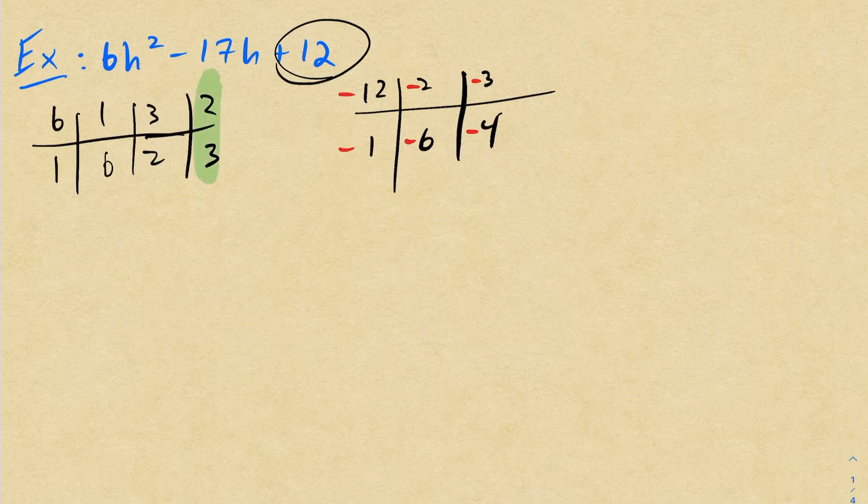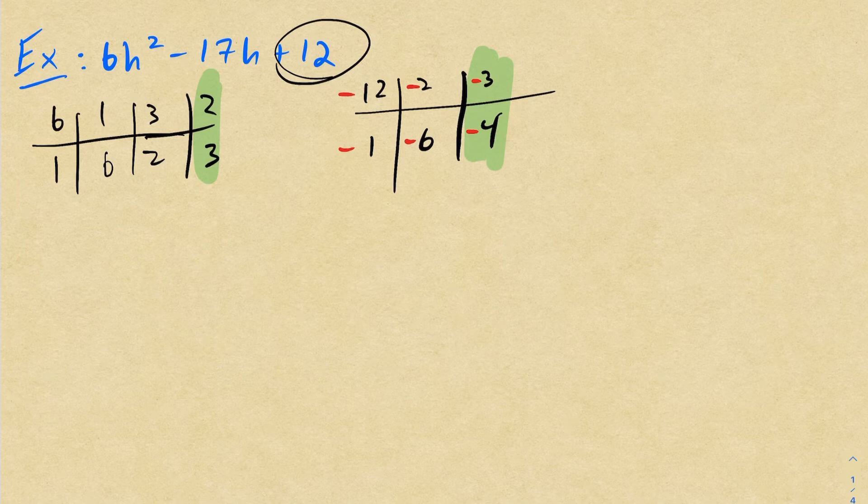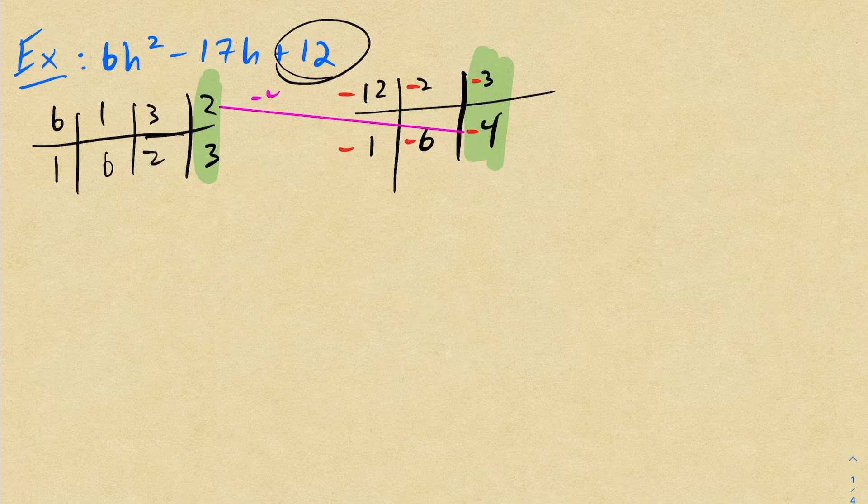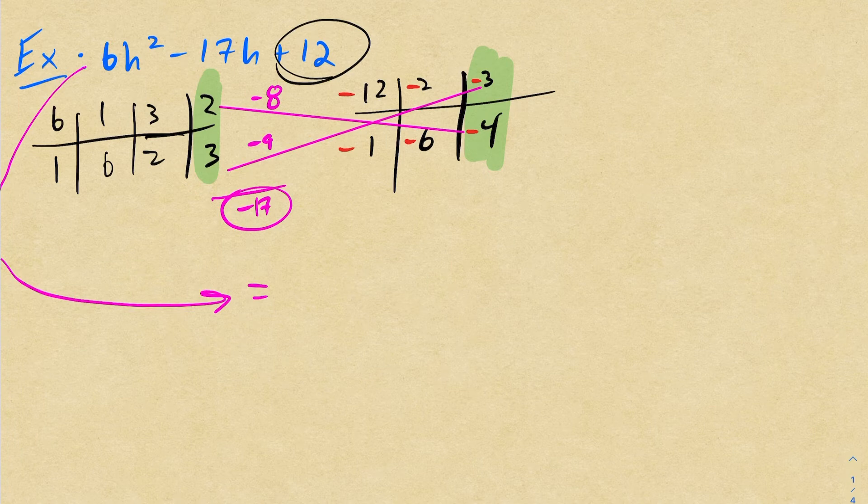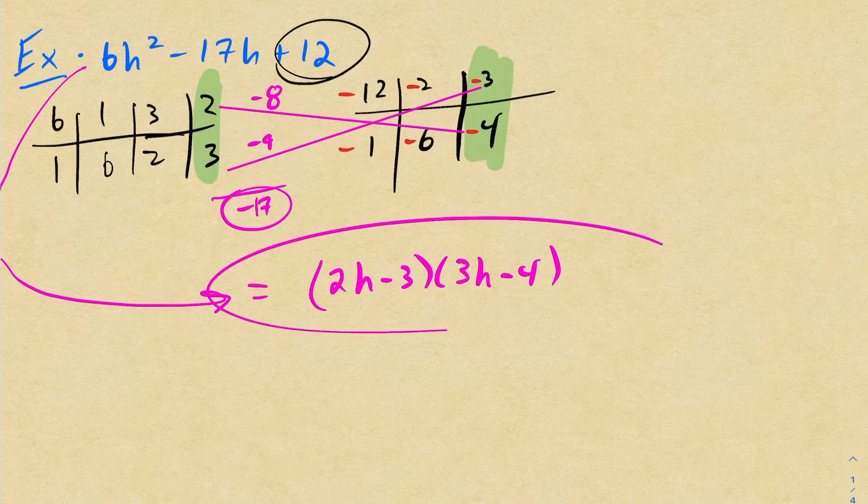So as you go through these combinations, you try these all out, you'll find that this combination with this one is the one that works. So if you take a look here, 2 times negative 4 is negative 8. 3 times negative 3 is negative 9. If I add these, I get negative 17. So therefore, this is going to factor into what? Well, again, you read this from left to right. It's going to be 2H minus 3, 3H minus 4. And now we're factored.